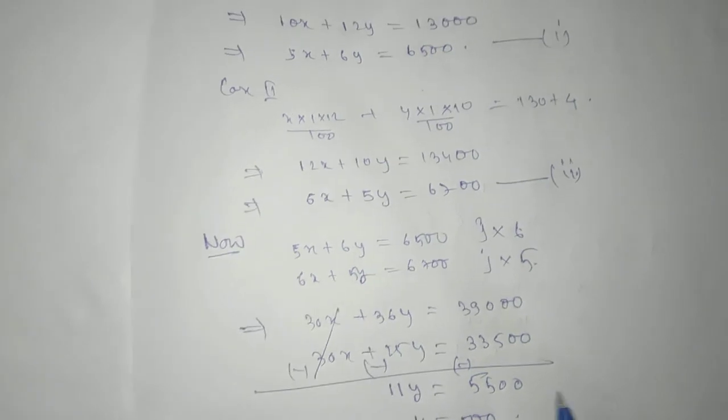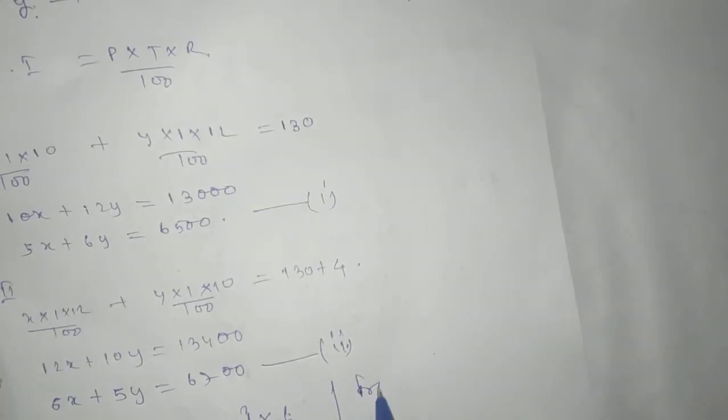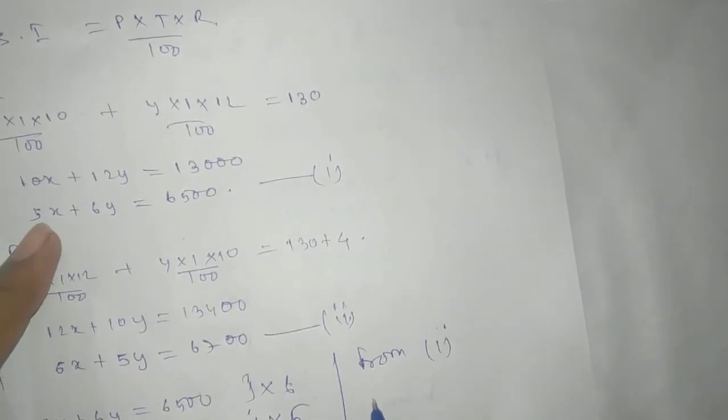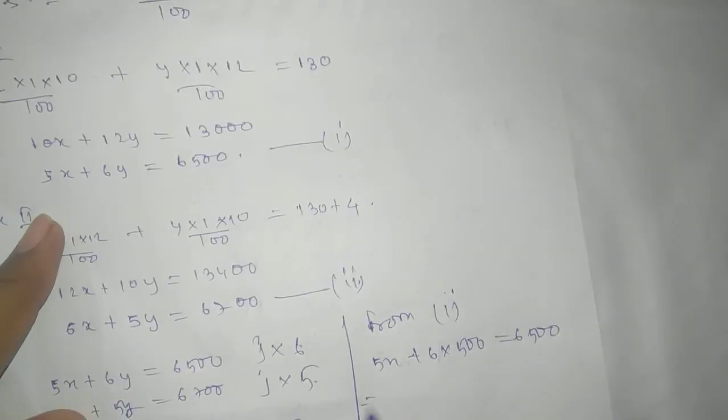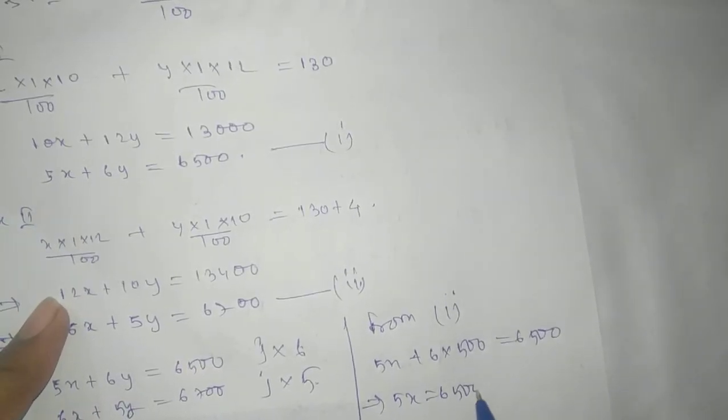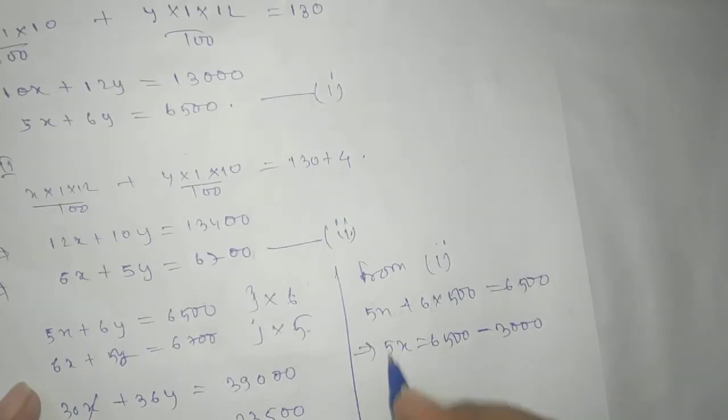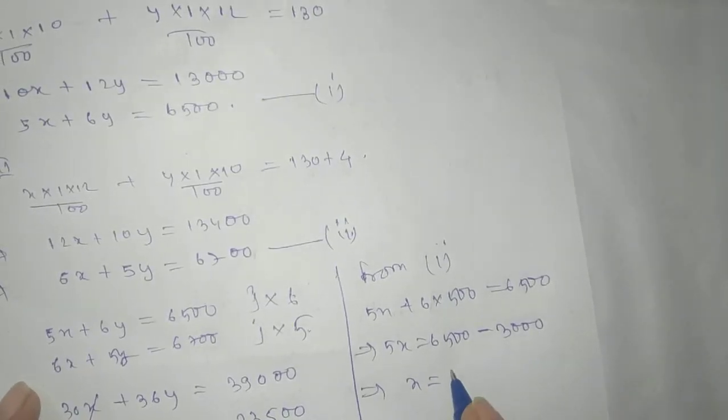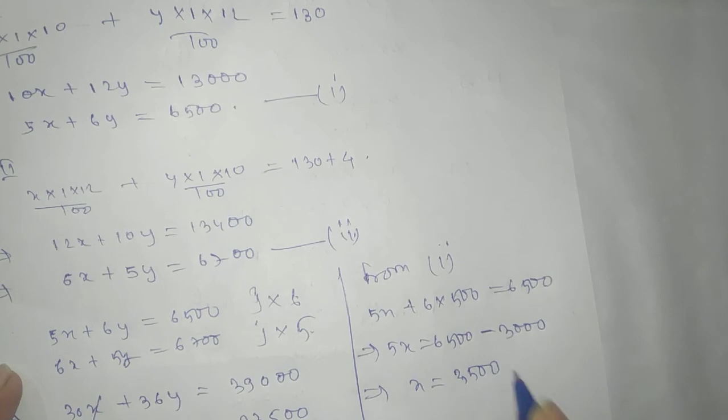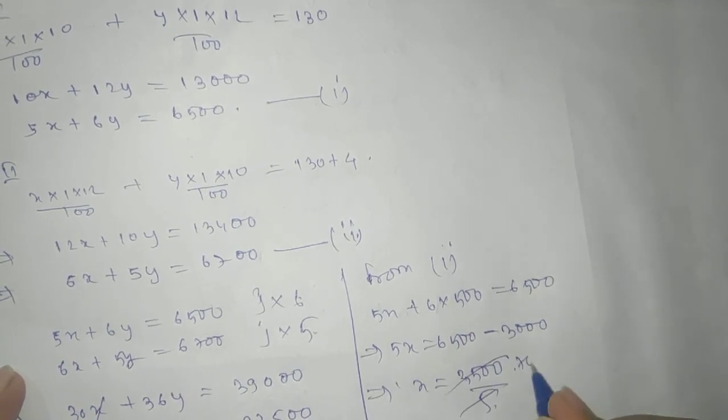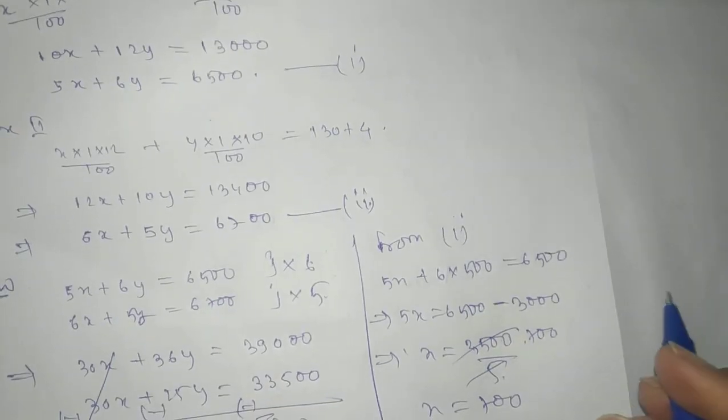This gives y = 500. From equation one, substitute: 5x + 6 × 500 = 6500. This gives 5x = 6500 - 3000 = 3500. Therefore x = 700. I hope you people have understood. Thank you.